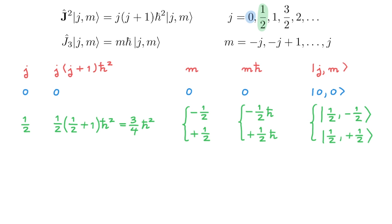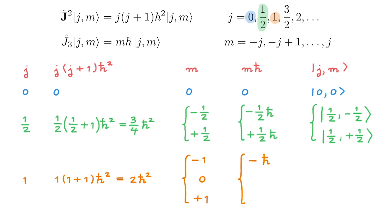Moving on to the next value, j = 1. Plugging into the j squared eigenvalue expression gives 2ħ². There are now three possible values for m: the first is −j = −1, then adding 1 gives 0, and adding 1 again gives +1, which equals j. These three m values give three j3 eigenvalues: −ħ, 0, and +ħ. There are also three eigenstates: |1,−1⟩, |1,0⟩, and |1,+1⟩.